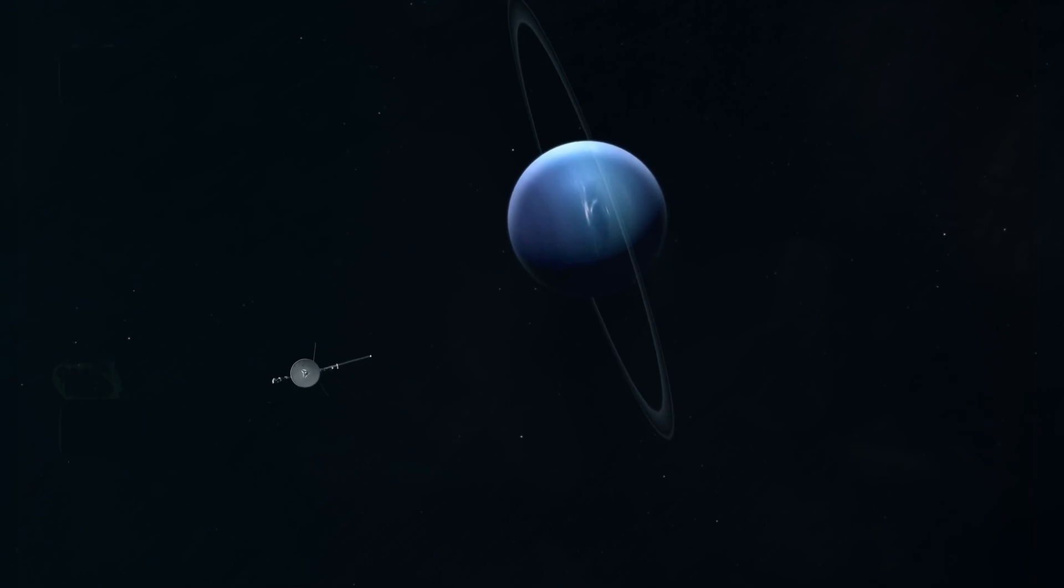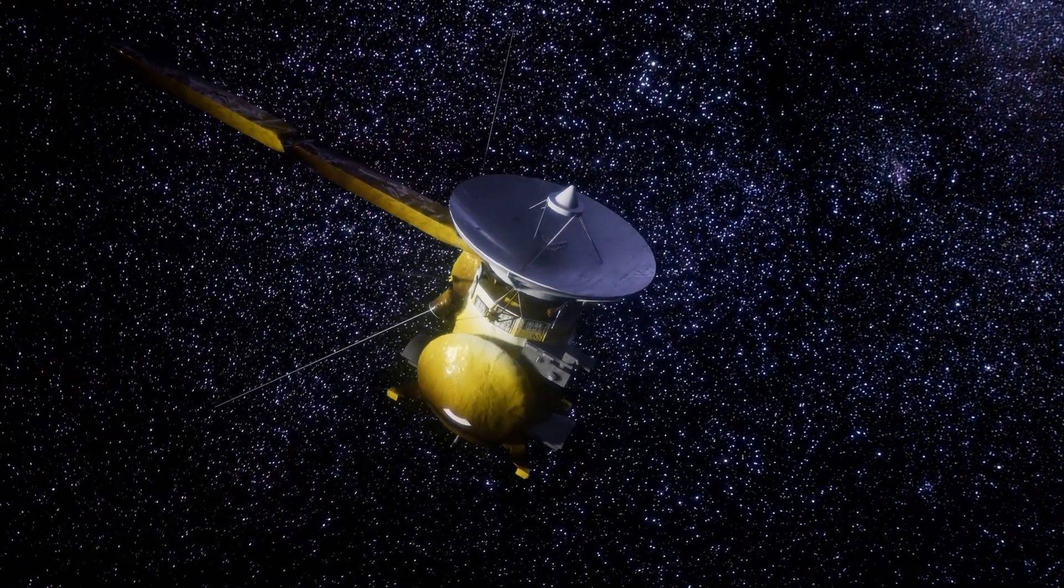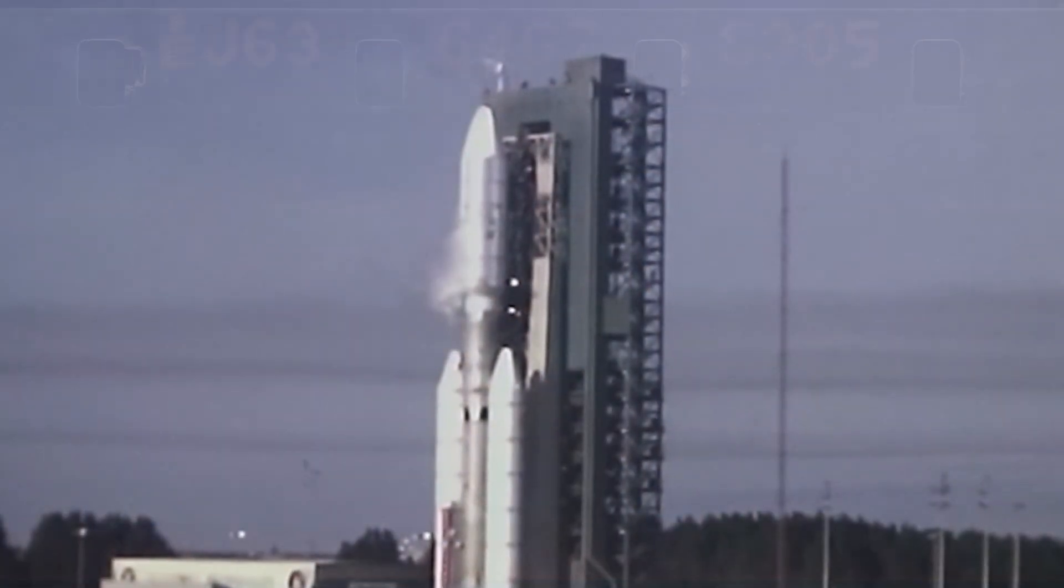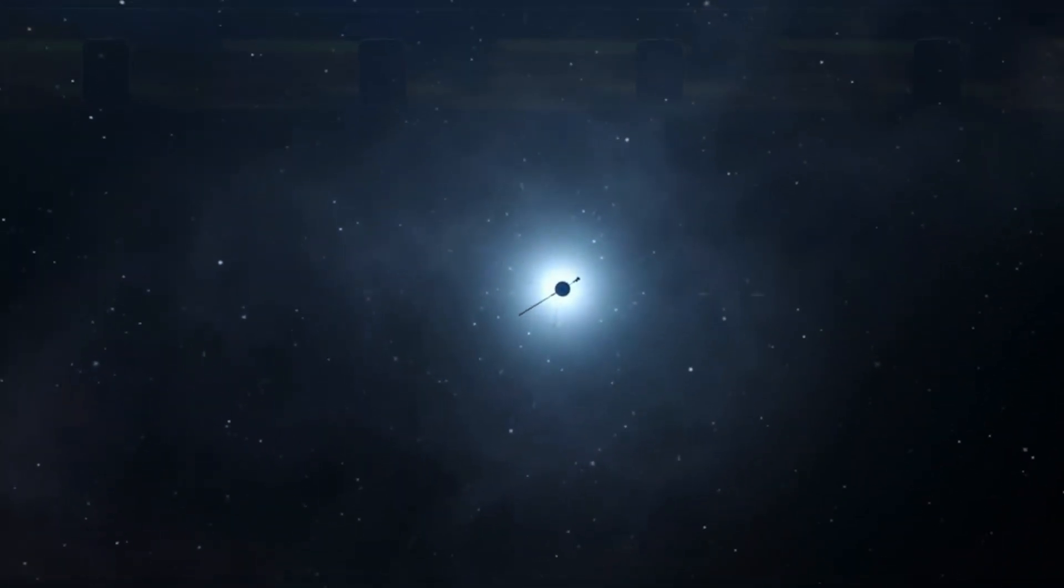Following Voyager 2's successful flyby of Neptune, the mission was rebranded as the Voyager interstellar mission. The focus shifted to seeing how far these spacecraft could travel and what information they could gather from beyond our solar system.